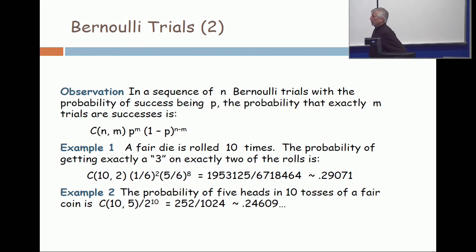Okay, trust me that my arithmetic is correct. At least Maple tells me. Okay, another example. If you flip a fair coin 10 times, the probability that you get exactly 5 heads is C(10, 5) over 2 to the 10th.